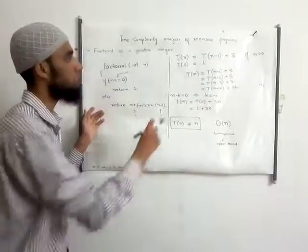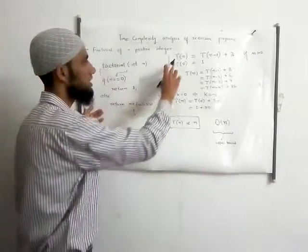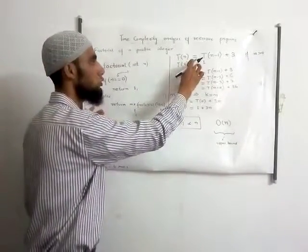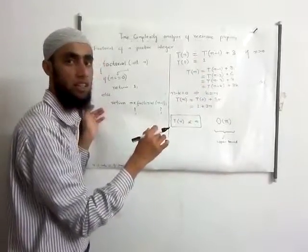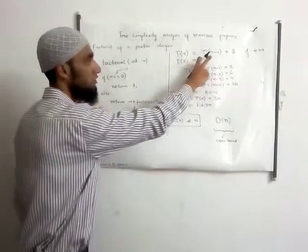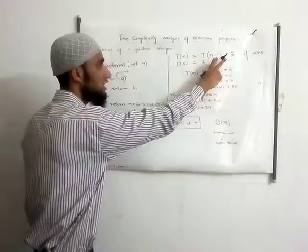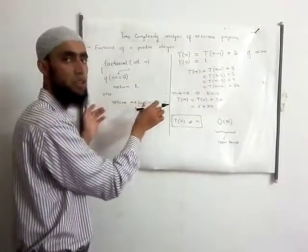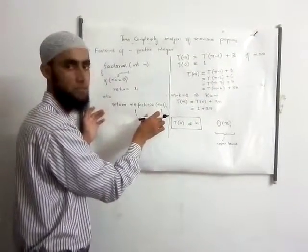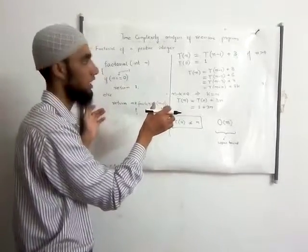Let's say total time complexity of this program is T of n, which is equal to time taken to calculate the factorial of n minus 1, plus 3 unit time of these simple operations which will be repeated over and over again.